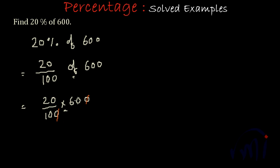This 0 will cancel this 0. And this 0 will cancel this 0. It is nothing but dividing both numerator and denominator by 100. And this will be equal to 6, 2s are 12, 120.